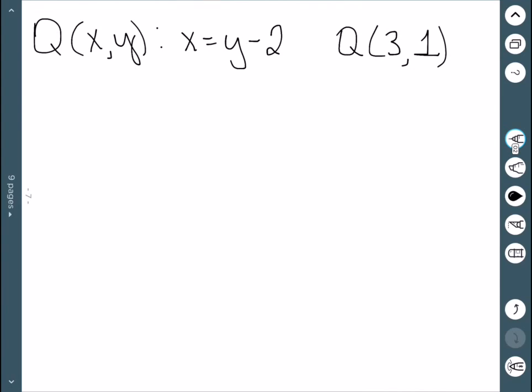Another one: Q(3,1). This says 3 is equal to 1 minus 2, which is false. The order here is very important. X comes first in the definition, so x should come first whenever we assign values.